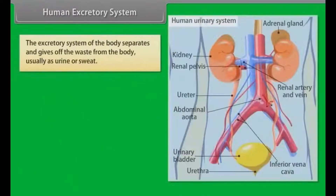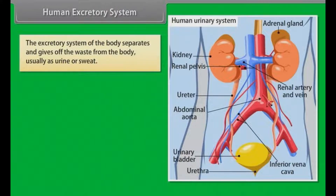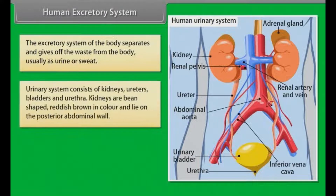Human excretory system. The excretory system of the body separates and gives off waste from the body, usually as urine or sweat. The urinary system consists of kidneys, ureters, bladder and urethra.